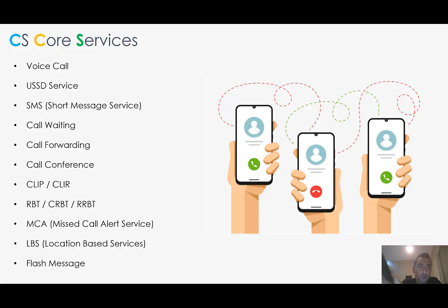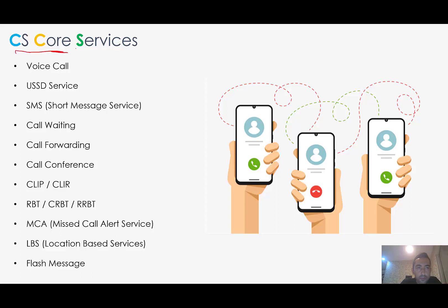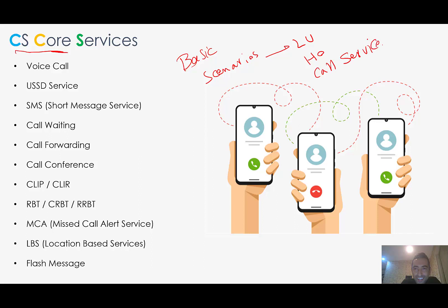Hello everyone and welcome to Episode 7 of the Mobile Networks Overview course. In Episode 6 we talked about the core network CS part. In this video we want to add some supplementary content and finish the CS part, and maybe in the next episode continue with basic scenarios like location update, handover, and call service. So let's talk about the CS core services.